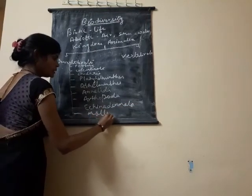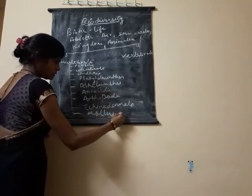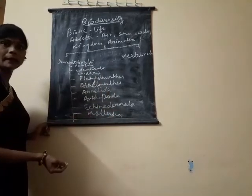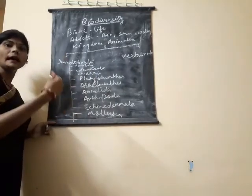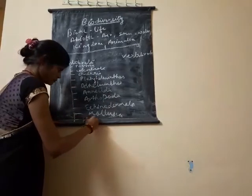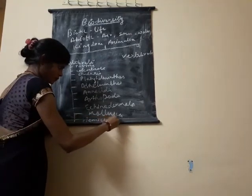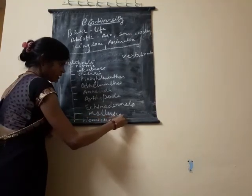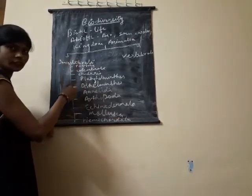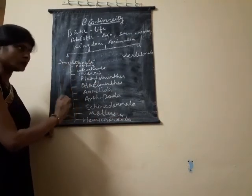And one more group is Hemichordata, which includes organisms having half notochord and half absent. This division was based on the structure of the body design and the features present in the body.